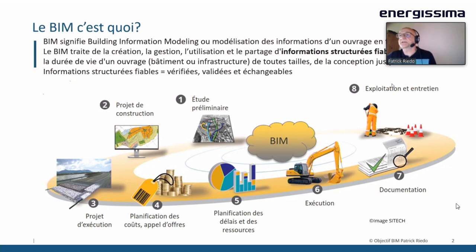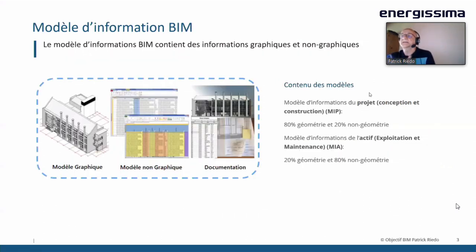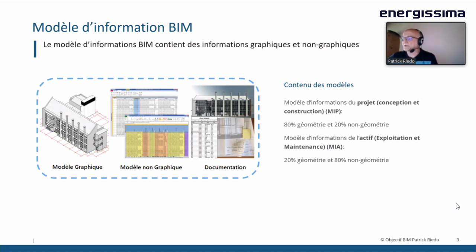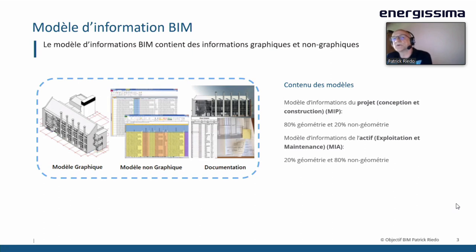C'est durant ces phases d'exploitation et d'entretien. Qu'est-ce qui est contenu dans un modèle BIM ? On a tout d'abord le modèle graphique, la 3D, la géométrie. C'est un assemblage d'éléments, d'objets qui vont composer cette géométrie en 3D. À l'heure actuelle, quand on parle d'un projet BIM, pour être honnête, c'est bien souvent cette 3D qu'on mentionne et pas grand-chose d'autre en termes d'informations. Mais dans un modèle BIM, on peut y ajouter la partie non graphique, c'est-à-dire les attributs, les propriétés ou les liens avec des bases de données liées avec ces objets géométriques.